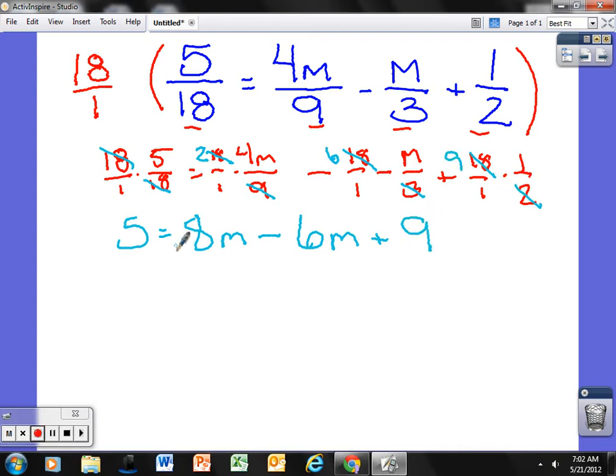Now it makes it a little bit easier for me to solve. First thing I'm going to do is combine like terms. I have 8m taking away 6m so I'll rewrite this now. I have 5 equals 2m plus 9.